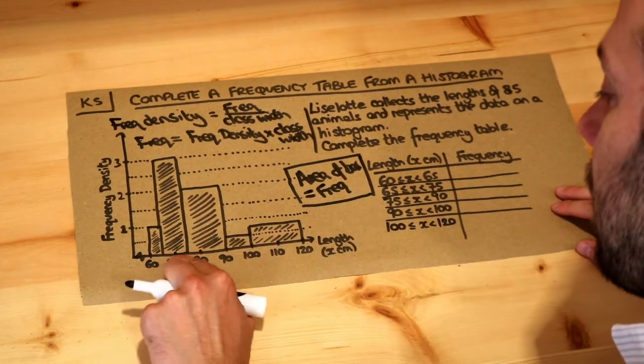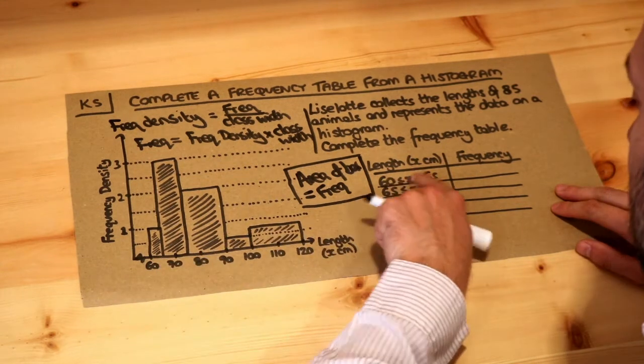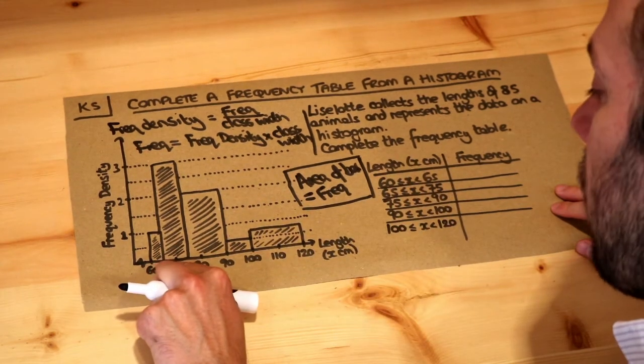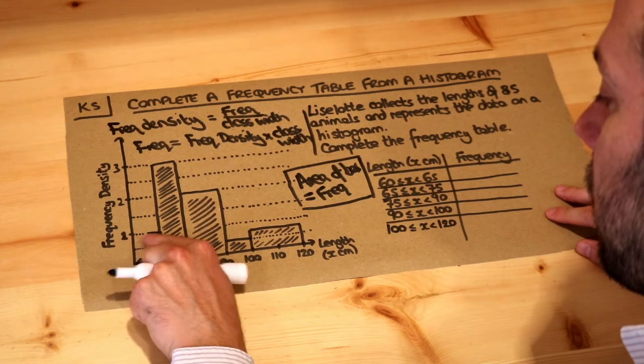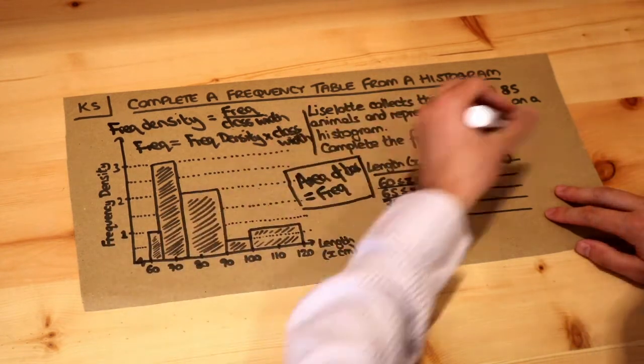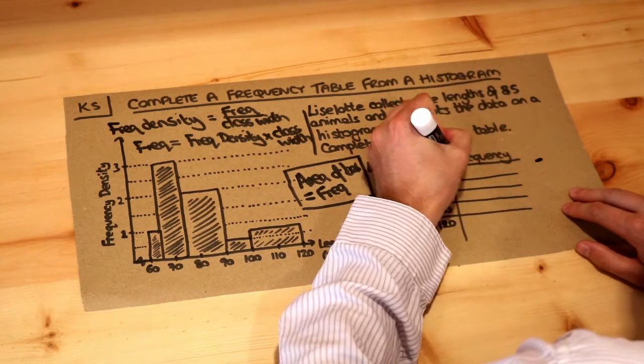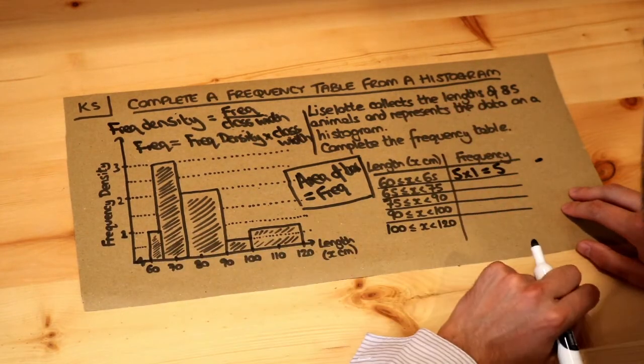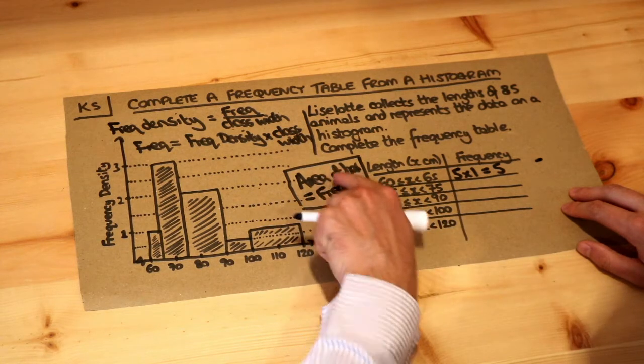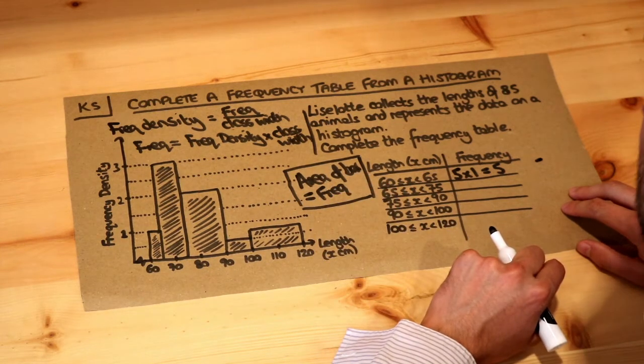Let's look at this first bar, 60 to 65. You can see that's a width of 5, and the height of the bar is 1 on the y-axis, so we do 5 times 1, which equals a frequency of 5. The area of this bar is 5, and therefore the frequency represented by the bar is 5.